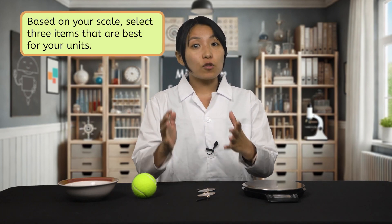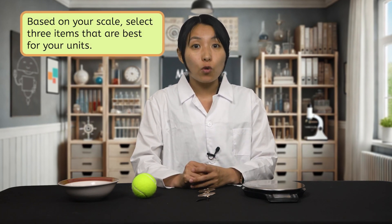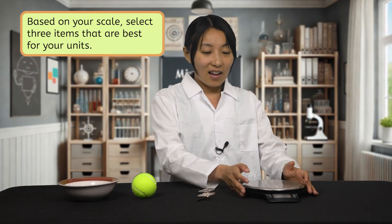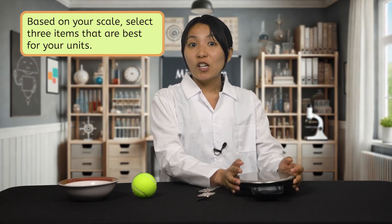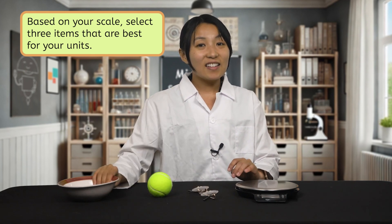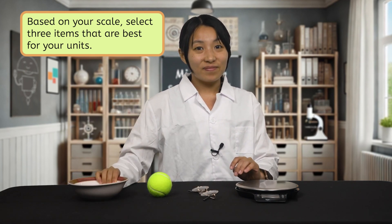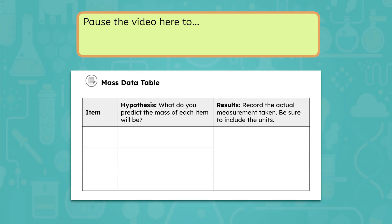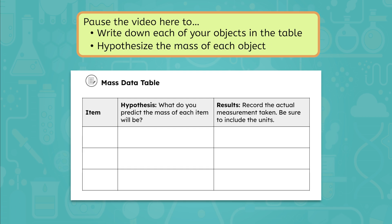Based on your scale, select three items that are best suited for your units. I have a food scale, so I've selected a pair of glasses, a tennis ball, and a cereal bowl. Pause the video here to write each of your objects in this table in your interactive lab notes. Then hypothesize the mass of each object. A raisin is about one gram, and a pineapple is about one kilogram. What do you predict the masses of your three items will be?